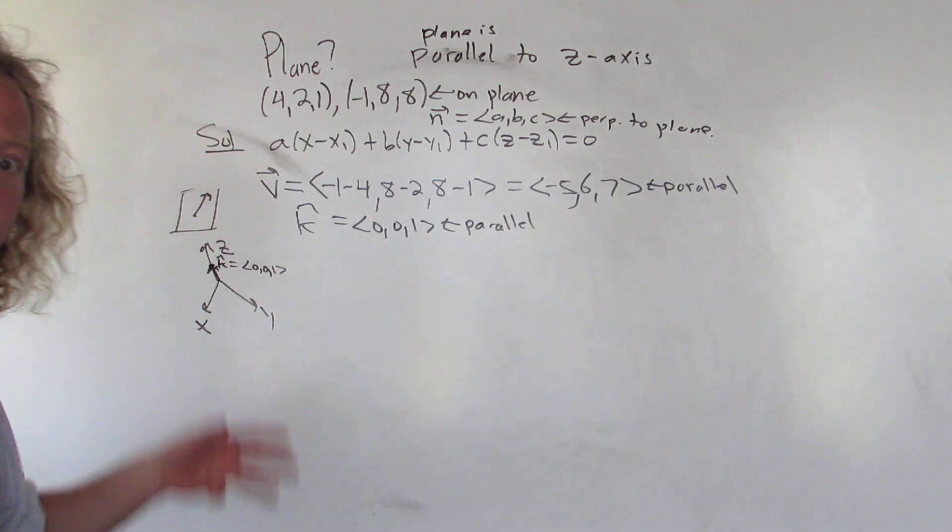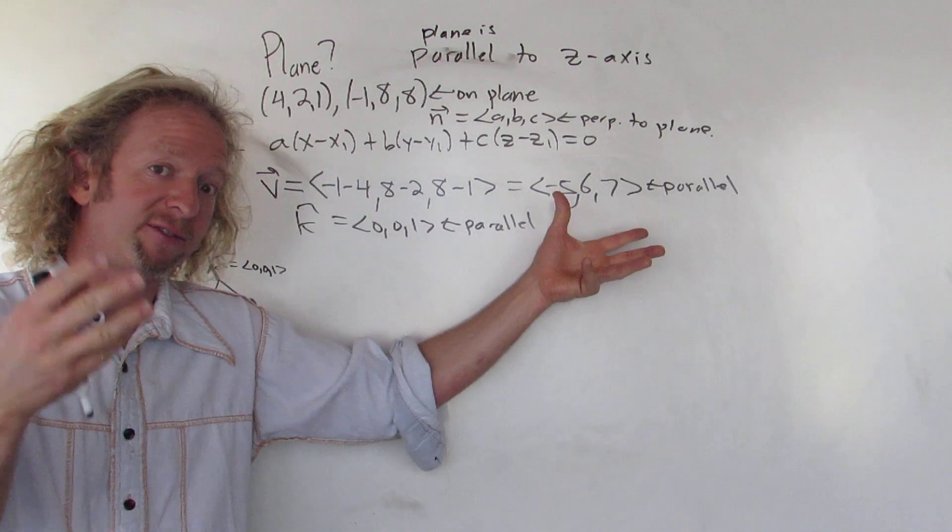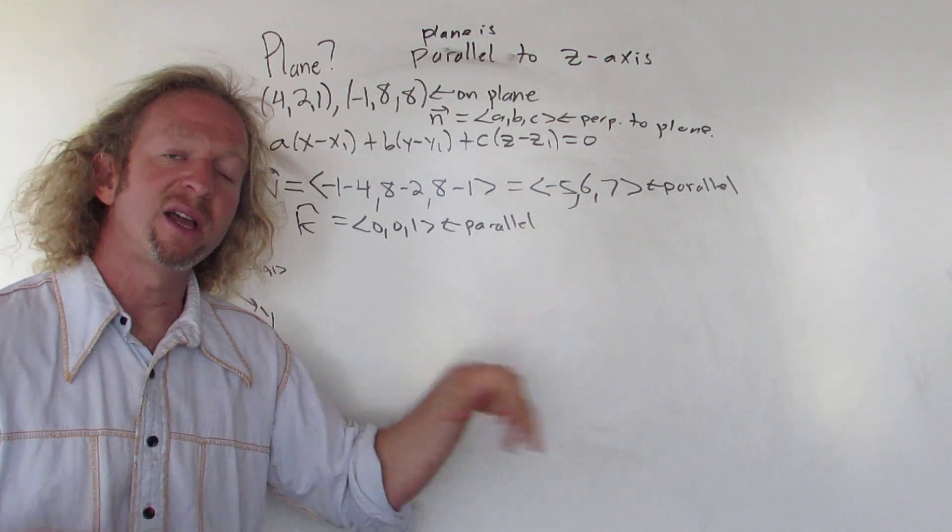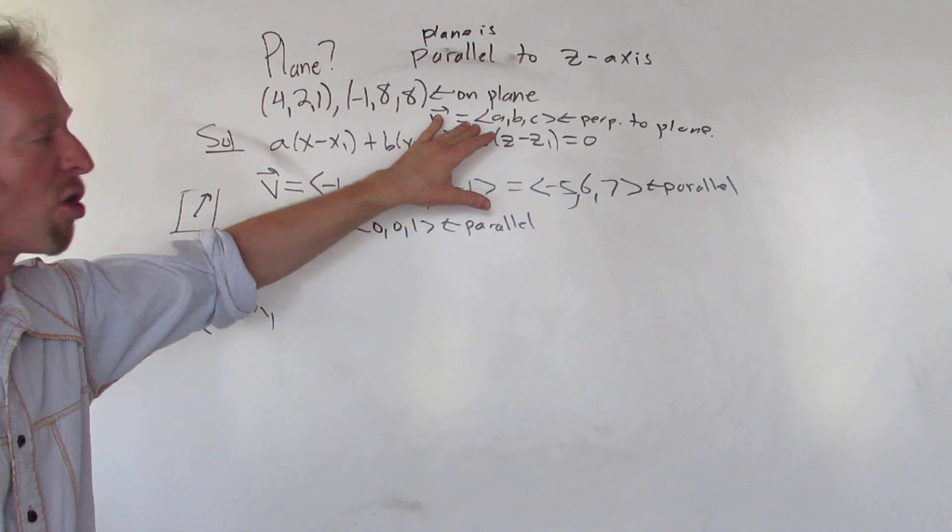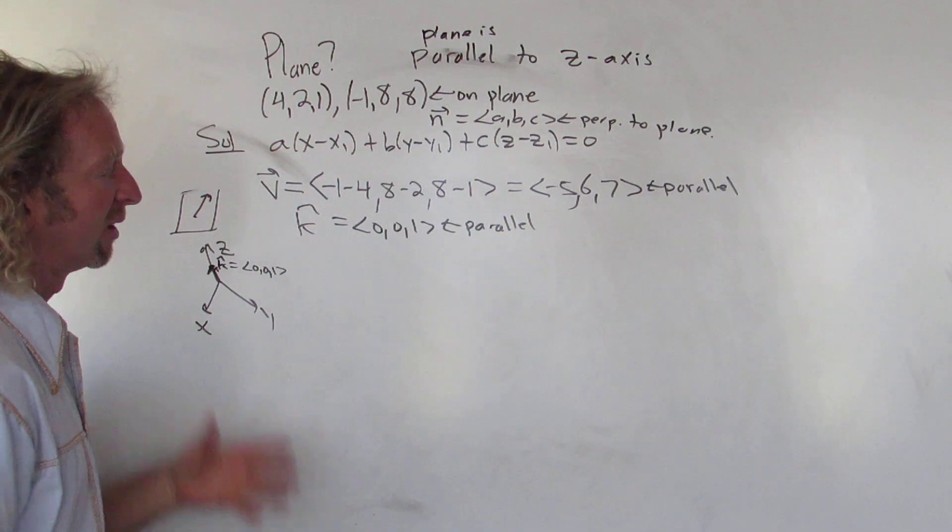So in this problem, basically, with the information they're giving us, they're giving us, well, we have to figure out these parallel vectors. Now that we have these, we can find our normal vector by taking the cross product and plug everything in. Kind of tricky. Alright, so let's do it.